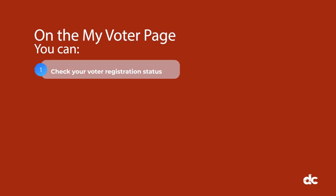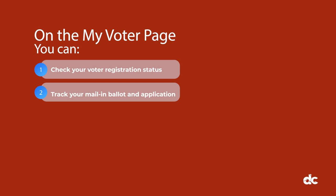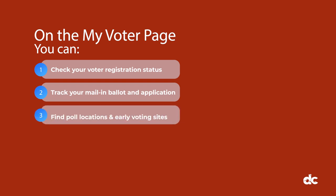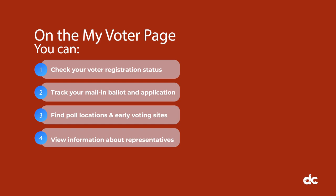Let me walk you through everything MVP has to offer. On the My Voter Page you can check your voter registration status, track your mail-in ballot and application, find your polling location and early voting sites, and view information about your elected representatives.